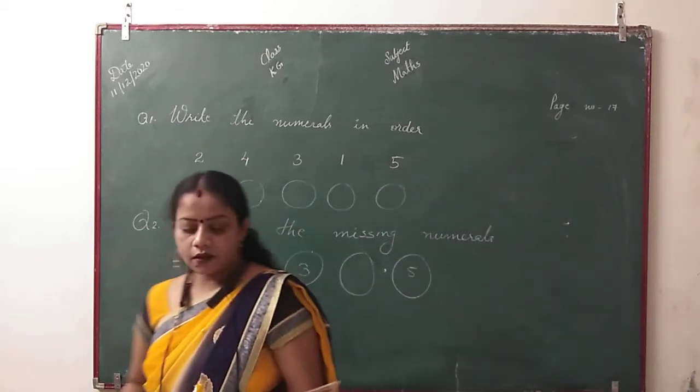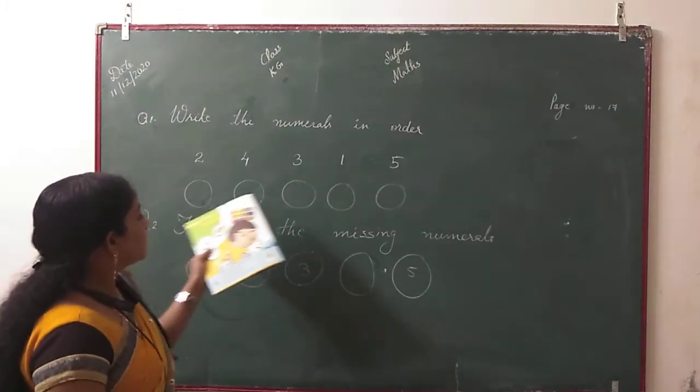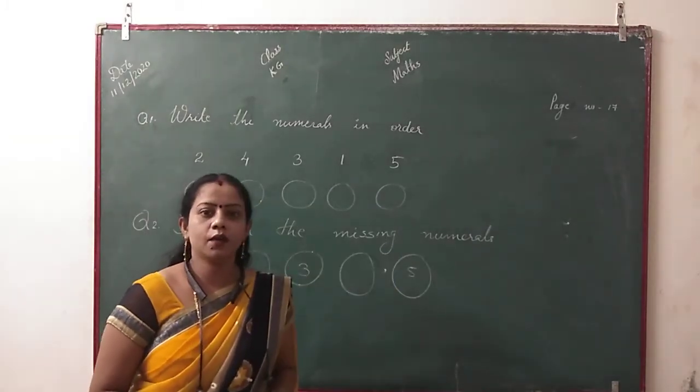Take out your book. Open page number 17. What is written? Write the numerals in order. You are given some numerals. You have to arrange them in order.